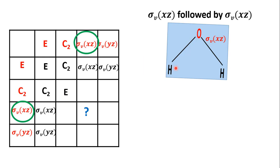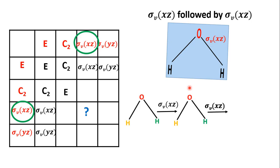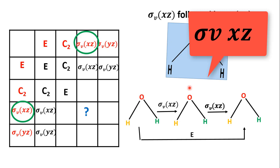The σVxz plane lies in the molecular plane, cutting through all three atoms. One half of each atom is above the plane and one half is below. When you do the reflection, the upper half becomes the lower half and lower half becomes the upper half, but there is no change in position of the atoms. So yellow remains yellow and green remains green — there is no change, and σVxz followed by σVxz gives E.